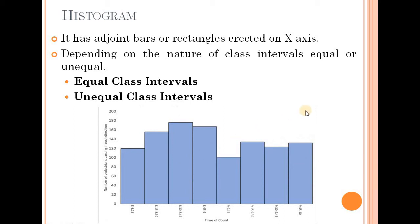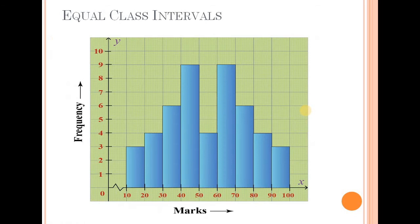Histogram. There are two types of histogram — equal class interval and unequal class interval. For equal class interval: class interval is on the x-axis and frequency is on the y-axis. For example, 0 to 10, 10 to 20, 20 to 30, 30 to 40 — the class interval is 10 throughout.